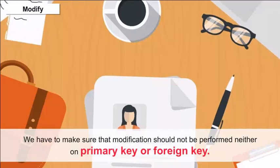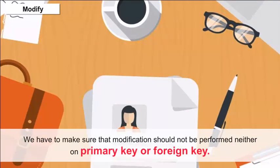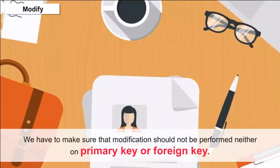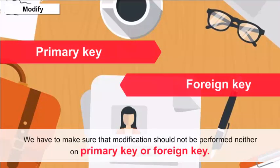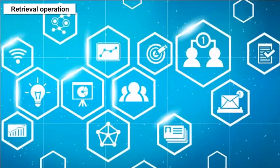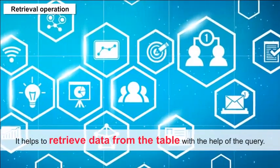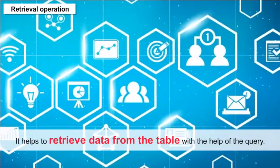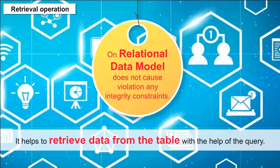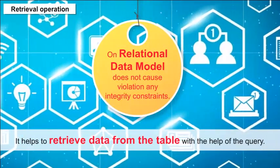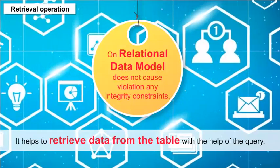We must ensure that modification should not be performed on the primary key or foreign key. Retrieval Operation — it helps to retrieve data from the table with the help of a query. On the relational data model, retrieval does not cause violation of any integrity constraints.